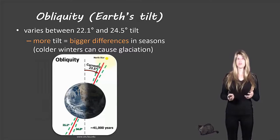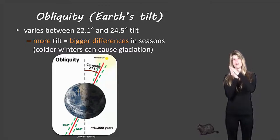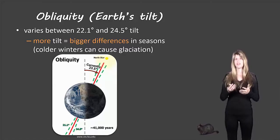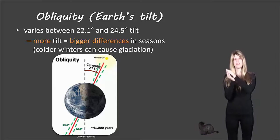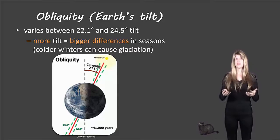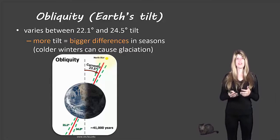The next orbital factor is obliquity, which has to do with the Earth's tilt. We know that the Earth is tilted on an angle of approximately 23.5 degrees right now, but sometimes it becomes more or less tilted. When it's more tilted, you end up with bigger differences in the seasons, and bigger differences mean that in wintertime it can be a lot cooler, which can cause glaciation.